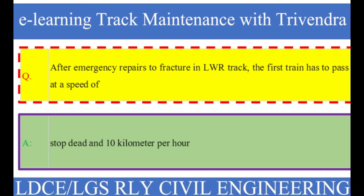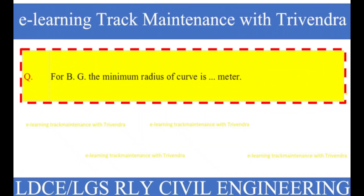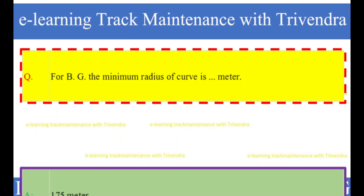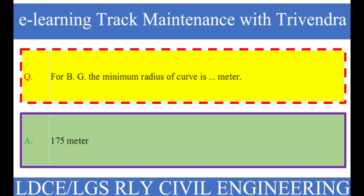Question number 72: For BG, the minimum radius of a curve is how many meters? The right answer is 175 meters.